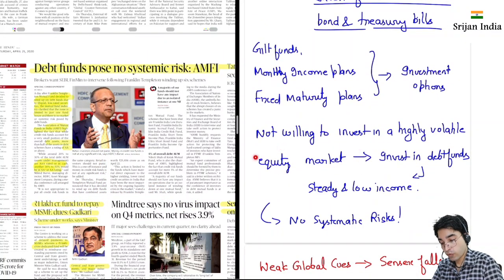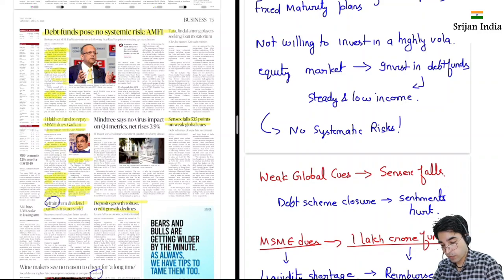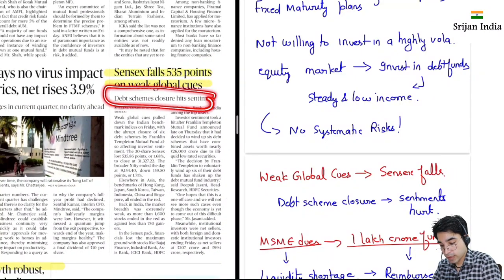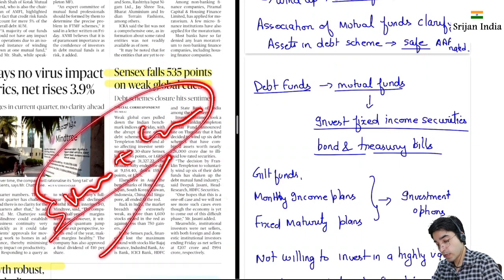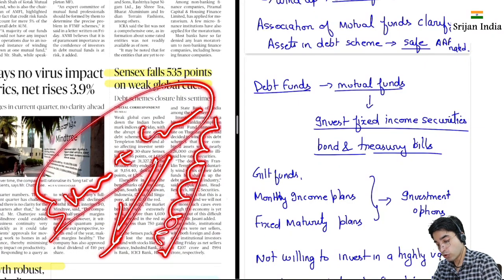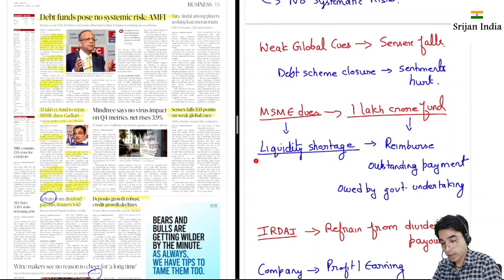Not willing to invest in a highly volatile equity market — equity market bahut upar niche ja raha hai, toh that is volatile. Invest in debt funds — steady and low income dete hain, no systematic risk. Then weak global cues — Sensex fall hua hai. Yeh sense x ko fall hua kyunki yeh debt scheme closure hua, isse sentiments down hue. Sensex chalta hai sentiments aur speculations pe — bears hote hain aur bulls hote hain. Bear niche girata hai, bull daudta hai. Then this is MSME dues — inke paas bhi kaafi liquidity crisis hai. Toh abhi ek crore ka fund bana raha hai taaki inki liquidity shortage ko address kiya ja sake. Is fund se reimburse hoga outstanding payment jo government undertaking ka hai for these MSME dues — woh clear kiye jaayenge taaki in MSMEs ke paas paaryaapt maatra mein paise rahein, kyunki inko wages bhi deni padengi.